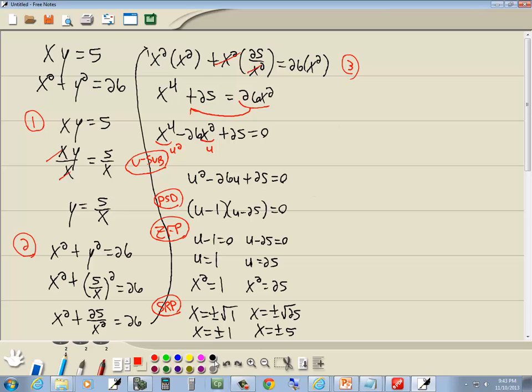Okay. Step 3. We want to then take these answers and plug them into our equation from step 1. So we came up with x equals 1, and we came up with x equal to negative 1. Let me start with those first, and then we'll do the 5 and negative 5. So we're plugging them into this equation. So we've got y equals 5 over x. Here, we said x is 1. So we've got y equals 5 over 1, or y equals 5. So this answer will be 1, 5.